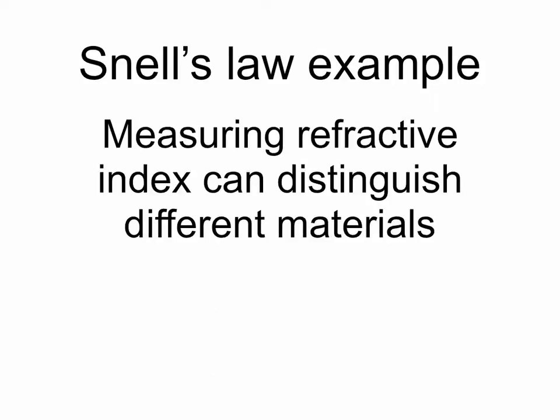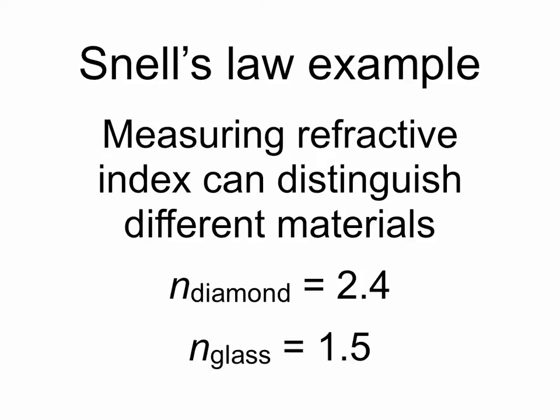So we've measured the refractive index and we can use that to distinguish between different materials. Diamond has a refractive index of 2.4. Glass, meanwhile, most glasses have an index of refraction of around 1.5. So we've determined that this mystery material is not a huge chunk of diamond, but glass.